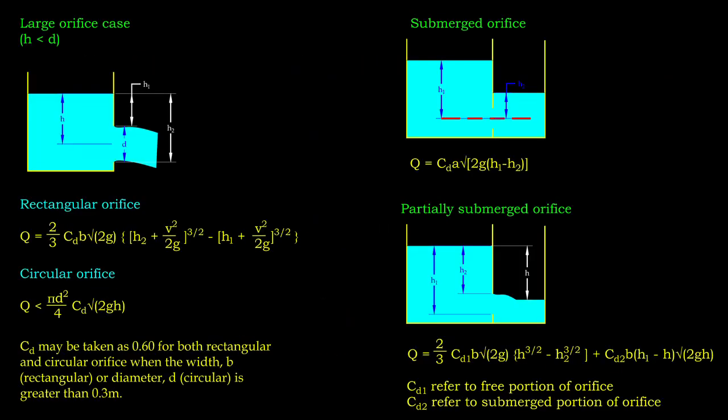At the end of this video, we will be presenting the formulation to calculate the flow through several orifice cases. The first case is where a large orifice is fitted to the container. The shapes of the orifice in this case are rectangular and circular. Then, we look into the situation where the orifice is either fully or partially submerged in downstream liquid.